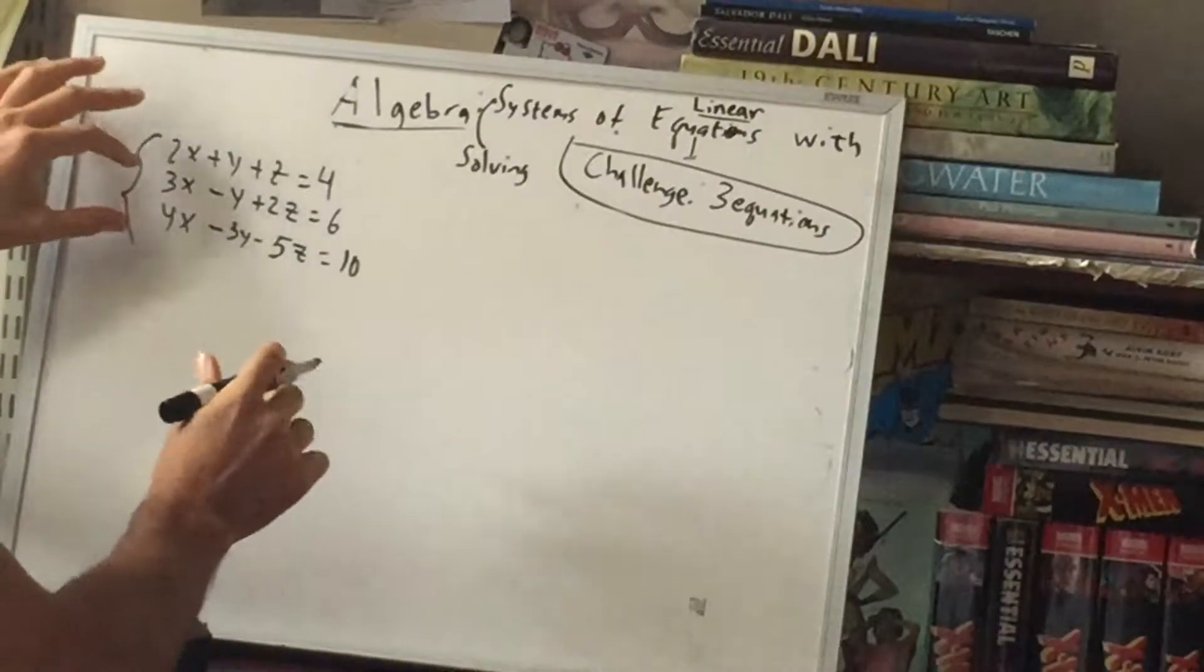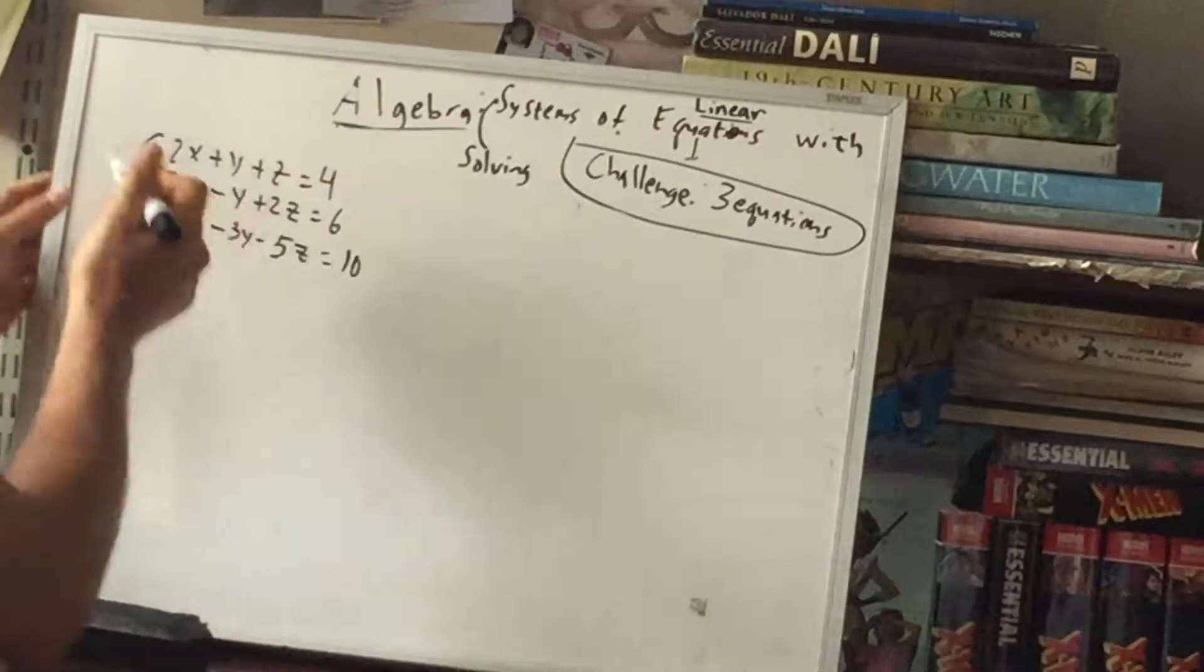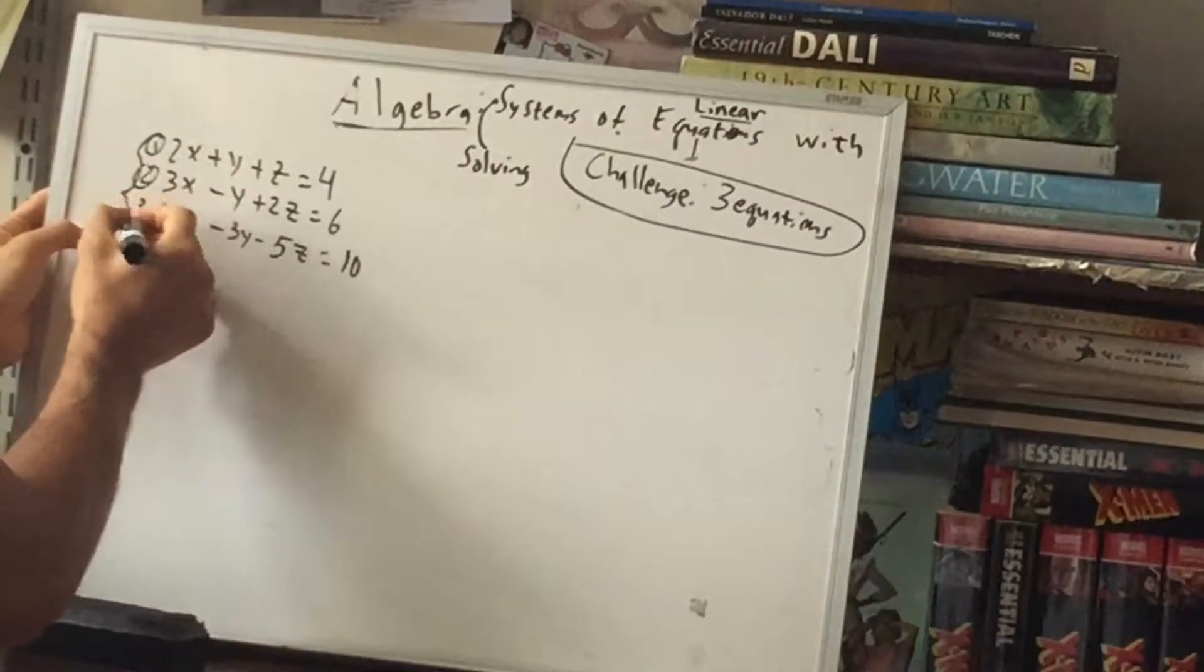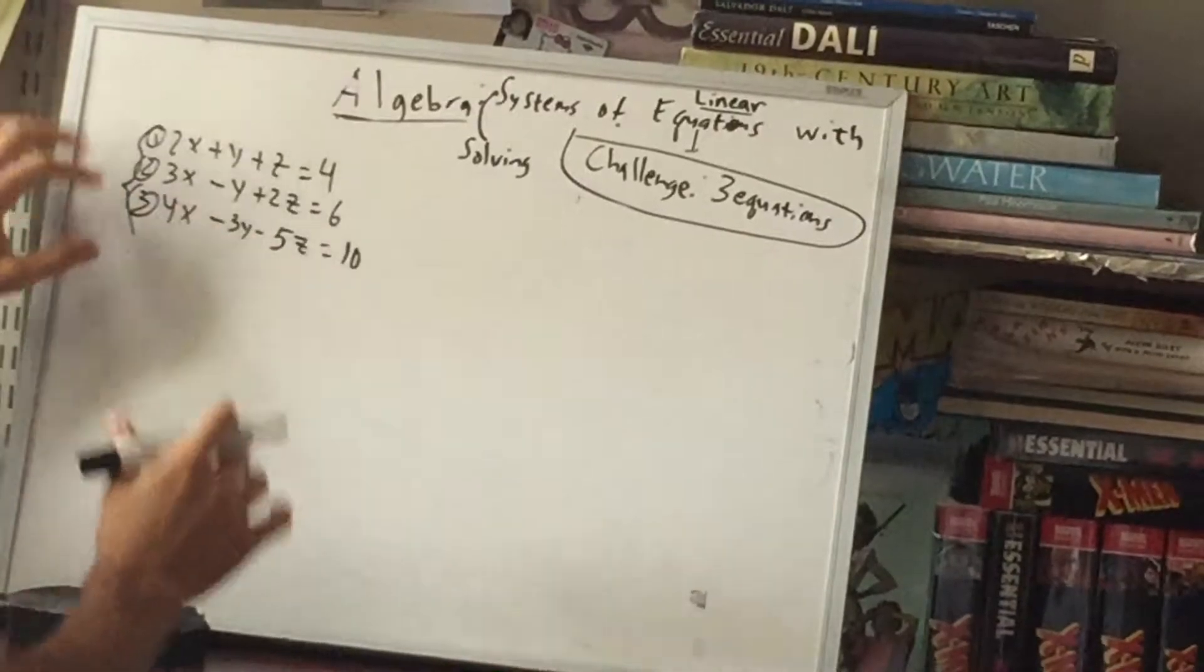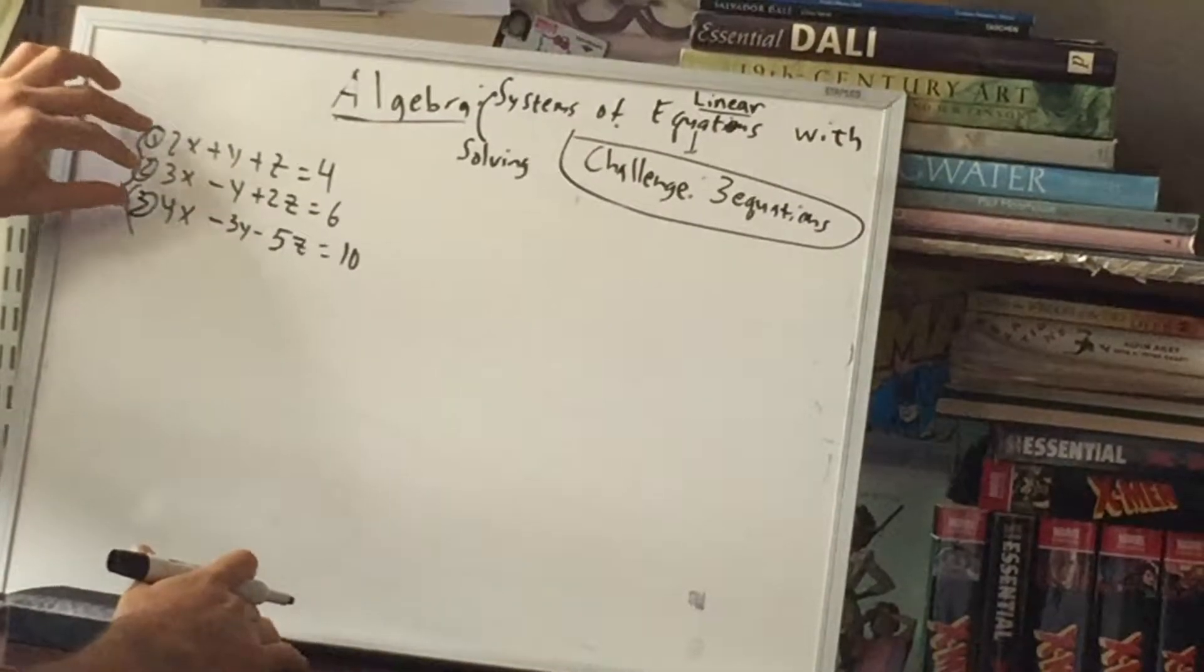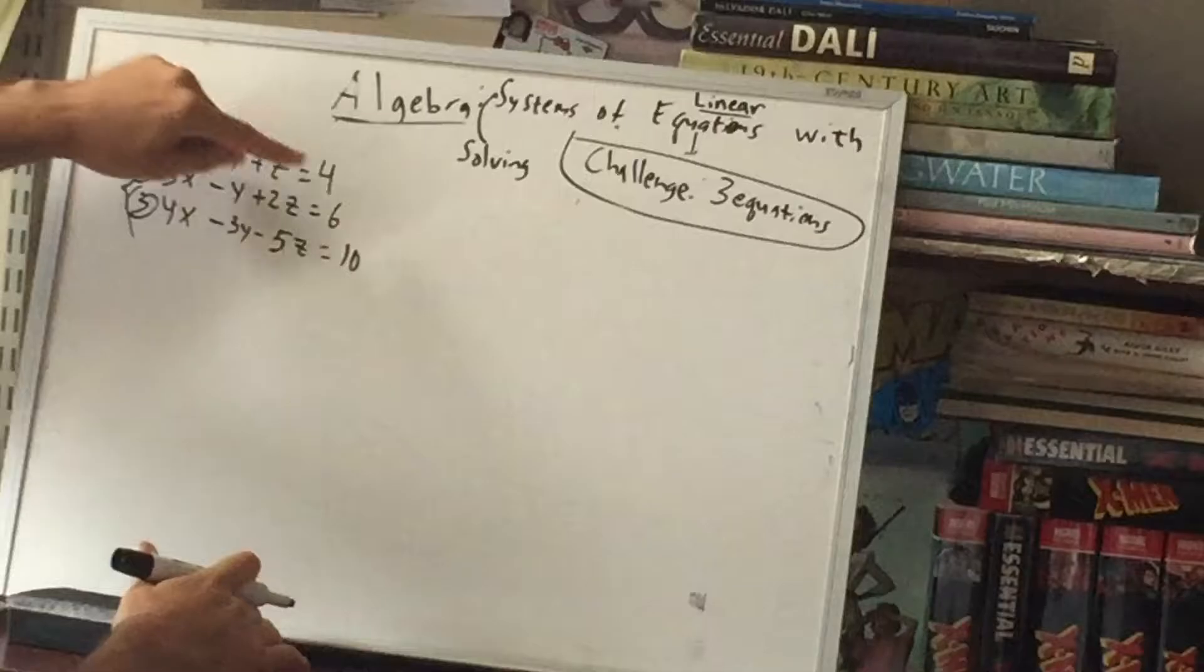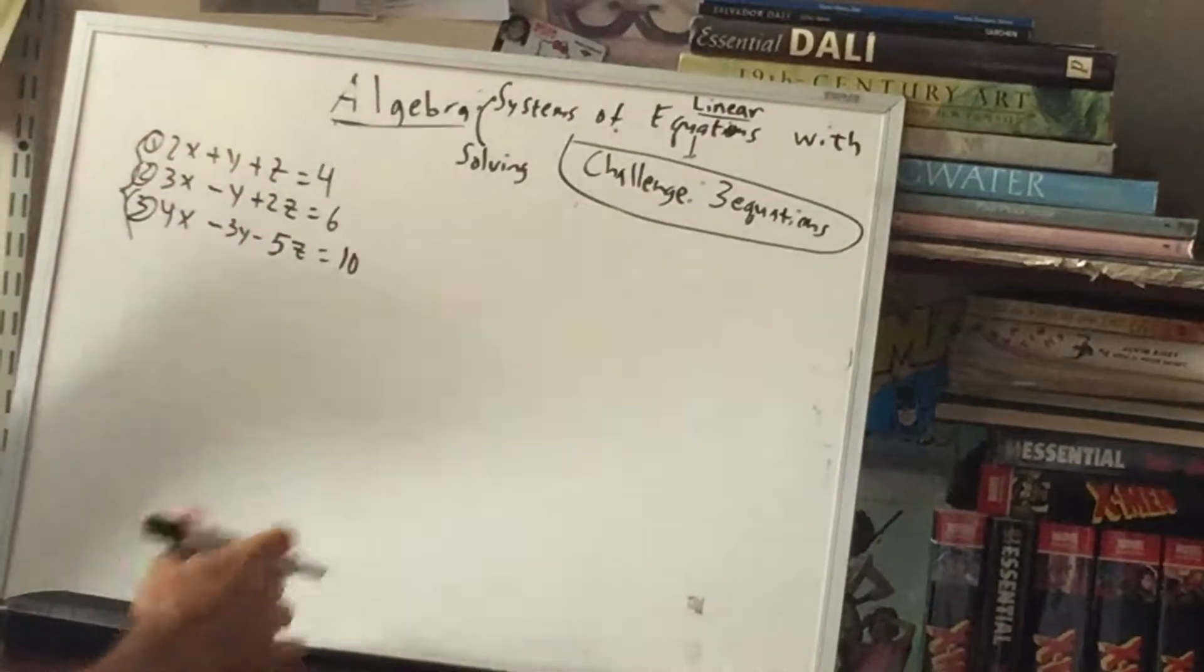All right, so here's the name of the game. There's three equations, which we'll label one, two, and three, or else we'll completely get lost. We want to try to get from three equations and three variables to two equations and two variables.